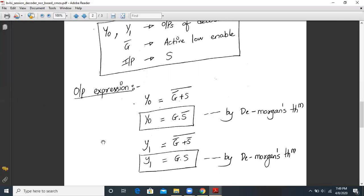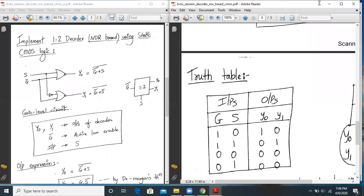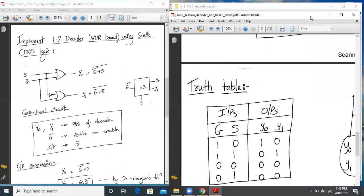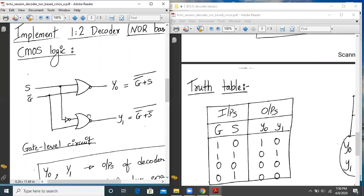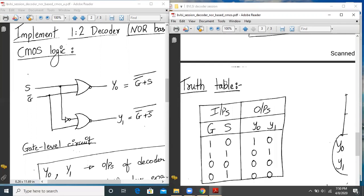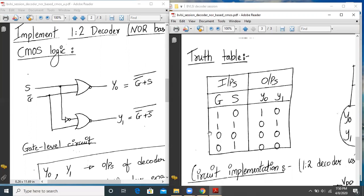Now let us go ahead and implement the circuit. This is the truth table for the same. Let me just open up another window. As you can see, your G is my active low input. So basically, it will be active whenever we apply a zero. G and S are my two inputs and Y0 and Y1 are my two outputs.